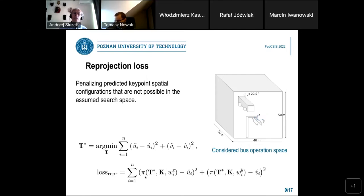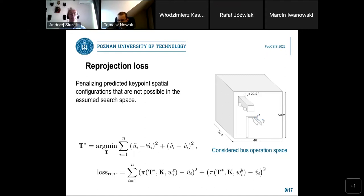To repeat: phi is a projection function using our optimum T* transformation, K is the camera matrix, and omega_i is the coordinate of a 3D point. We are subtracting the predicted points, squaring, and summing over all key points. This was the reprojection loss.